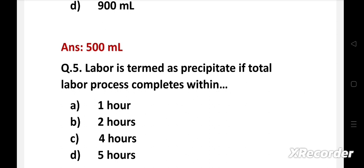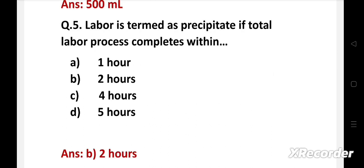Labor is termed as precipitate if total labor process completes within: a: one hour, b: two hours, c: four hours, d: five hours. The right answer is option b, two hours. A labor is called precipitate when the combined duration of the first and second stage is less than two hours. It is common in multipara and may be repetitive. Rapid expulsion is due to the combined effect of hyperactive uterine contractions associated with diminished soft tissue resistance.